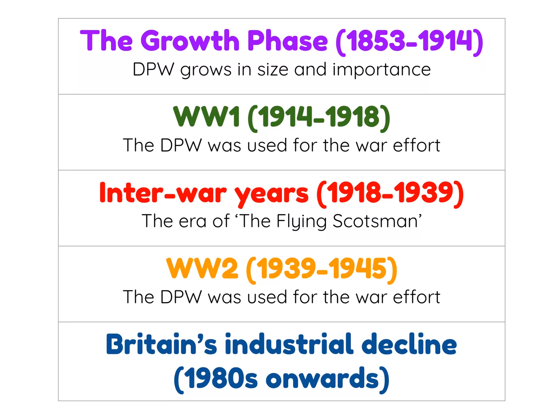Essentially we've got five main phases. The first one is the growth phase — this is when the site was established. We know that it was built in 1853, which was slap bang in the middle of the Industrial Revolution.